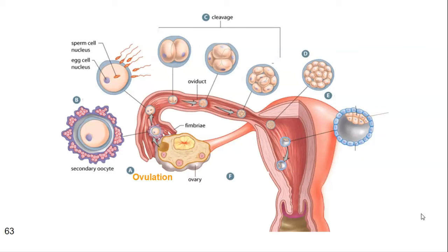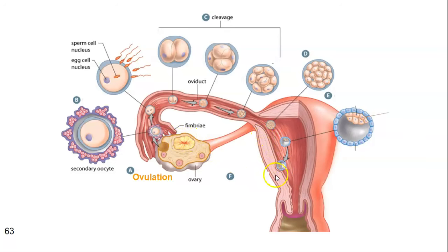We're going to start off by talking about ovulation. Here is the ovary — immature follicles go to developing follicles, become mature follicles, and then we ovulate. Ovulation happens because LH, the hormone, spikes. LH spikes, we ovulate, and then we form a corpus luteum, which starts to put out progesterone.